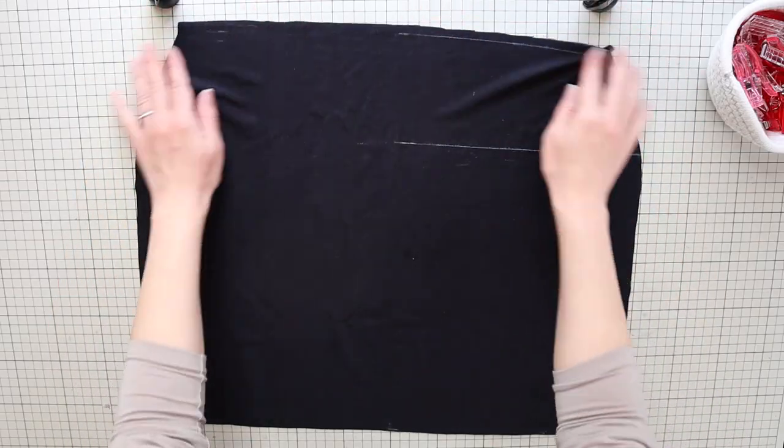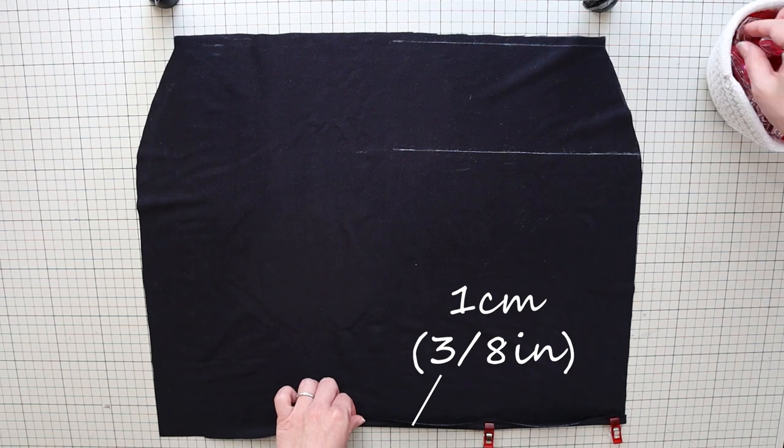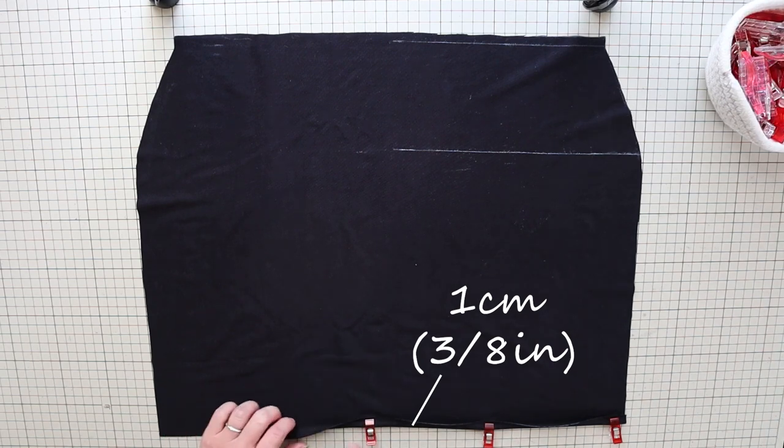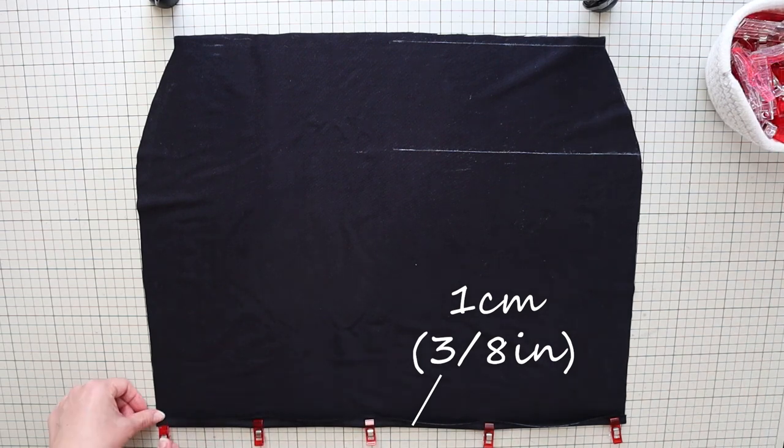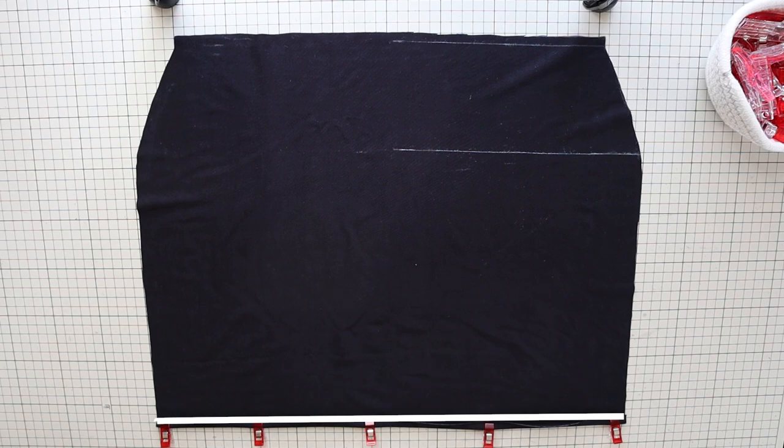Take each of your skirt panels and fold 1 centimeter or 3/8 of an inch from the bottom edge towards the wrong side. Do a zigzag stitch to keep the folds in place.